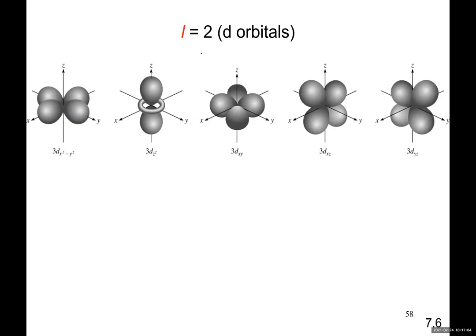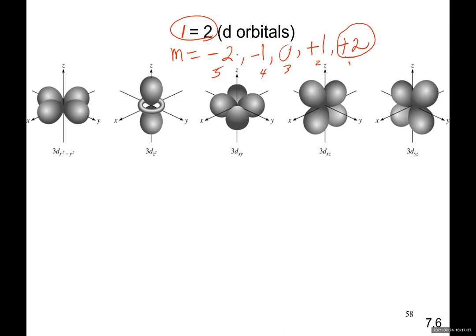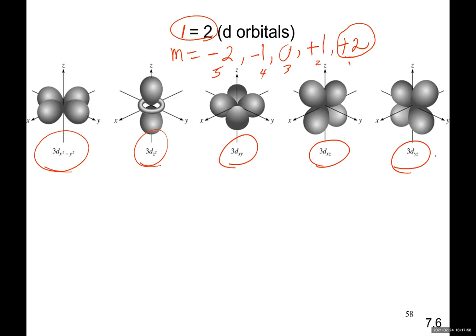If L is equal to 2, the magnetic quantum number could be minus 2, minus 1, 0, plus 1, and plus 2 — going from minus L all the way to plus L. So you have 5 different electron cloud shapes. These are called 3d x²−y² and other names for the five d orbitals. They come together as quintuplet sisters, and they all have the same amount of energy.